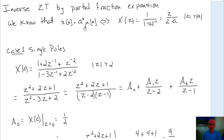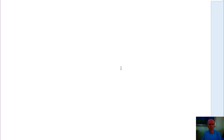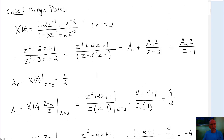We know that every time we get a term like this, we know that we're going to get an x of n of this form. So let's look at how to do it with examples. Let's take, for example, this x of z, and we want to find the inverse Z-transform. We're going to start out with single poles that don't repeat. They give it to us in this form because this is the typical form. I prefer to work with positive values of z, so I'm going to multiply numerator and denominator by z-squared.